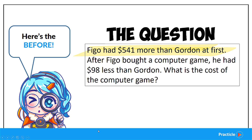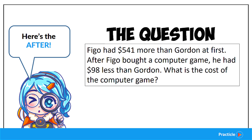Then what's the change? Think about what caused the difference. Figo bought a computer game — great job spotting that important piece of information. And finally, what happens in the after situation? As a result of the change, Figo had $98 less than Gordon. So do you manage to get all three of them right? If you did, give yourself a great pat on the back. Well done.